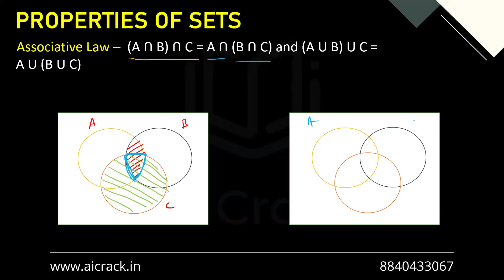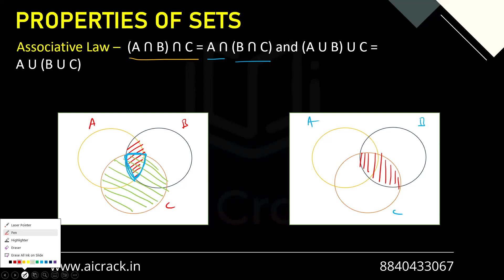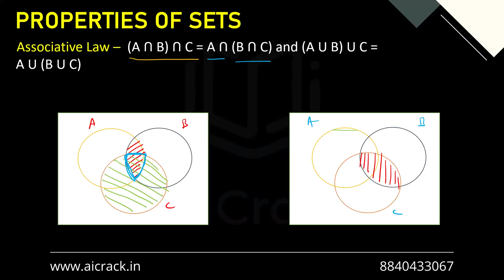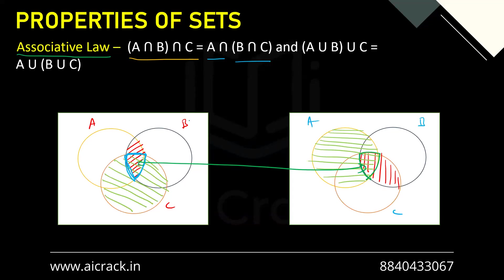Now let's do A intersection (B intersection C). Again, this is A, this is B, and this is C. We find B intersection C first, giving us this region, and then intersect with A. Eventually we get the same particular region as before — these two regions are the same. So no matter how we proceed, whether we start with A intersection B and then intersect with C, or start with B intersection C and then intersect with A, we get the same result. So associative law holds true.